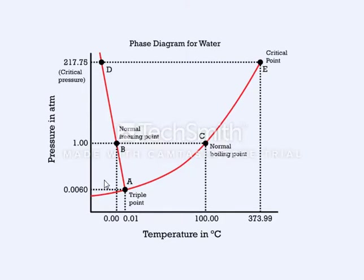We also see that we wouldn't expect sublimation of water unless we got below 0.006 atmospheres, and the critical point for water is quite high at 217 atmospheres and 374 degrees Celsius.